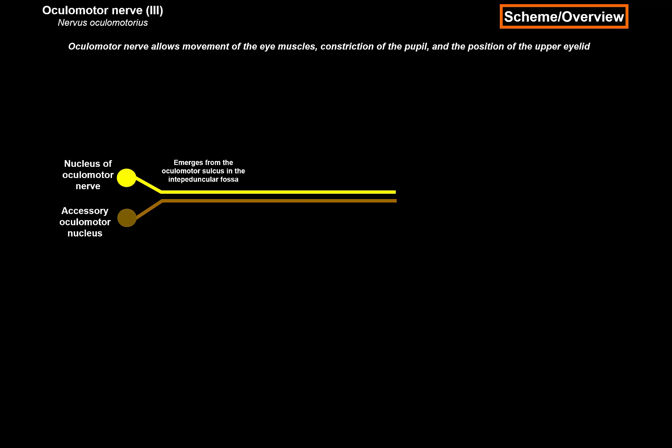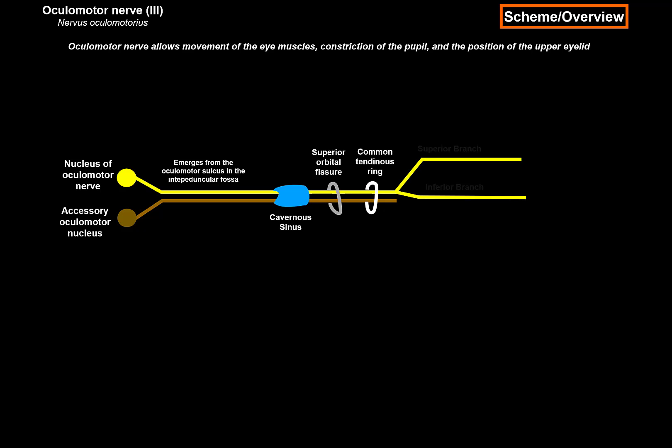The oculomotor complex emerges from the midbrain in a sulcus called the oculomotor sulcus, located in the interpeduncular fossa. It penetrates the dura mater to run laterally in the wall of the cavernous sinus. It enters the orbit through the superior orbital fissure into a ring called the common tendinous ring, and then it splits into a superior branch and an inferior branch. The superior branch innervates the levator palpebrae superioris, which is the upper eyelid muscle, and the superior rectus muscle. The inferior branch innervates the medial rectus, the inferior rectus, and the inferior oblique.